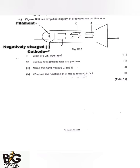Since the cathode is negatively charged, it can produce electrons once it is heated by the filament. Part C is called the grid, and the function of the grid is to control the amount of electrons that pass through the vacuum or space.